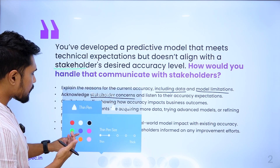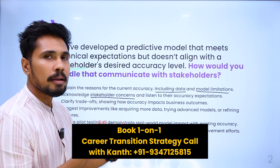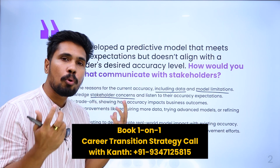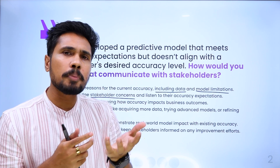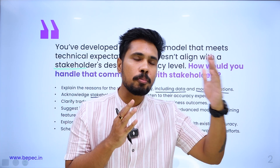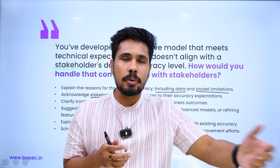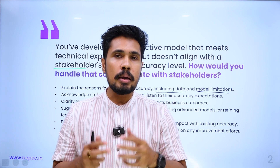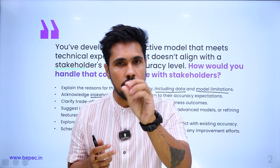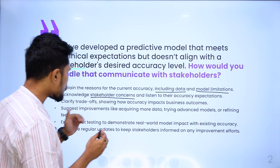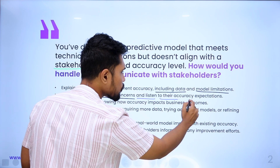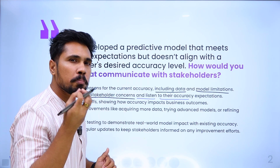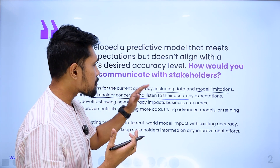Acknowledge stakeholder concerns. When you go to explain, don't rush and don't be overly technical. Try to understand what they're expecting and why. For example, why they want a certain accuracy — it could be because they are making future forecasts and need good accuracy for business profit, or they are trying to automate a process with machine learning. Listen to their expectations and understand their requirement before you explain.